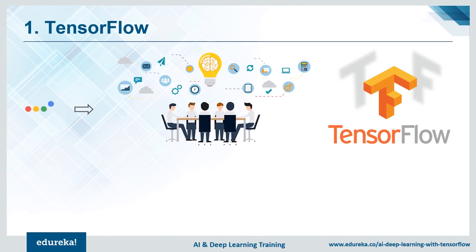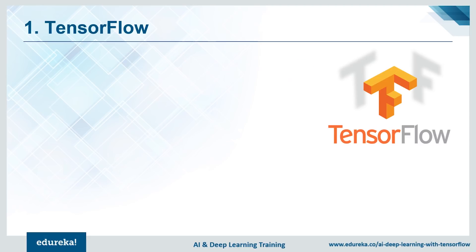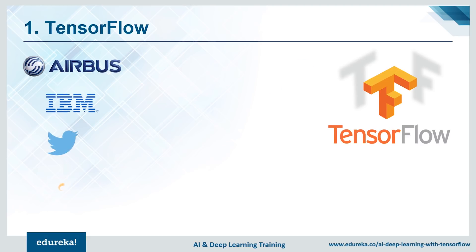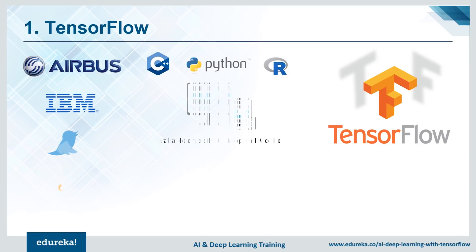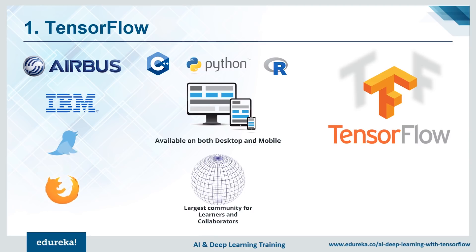TensorFlow is the brainchild of the amazing people at Google. The most well-known use case of TensorFlow has definitely got to be Google Translate. It is coupled with the capabilities of natural language processing, text classification, speech recognition, image recognition, forecasting, and tagging. It has been adopted by several giants such as Airbus, Twitter, and IBM due to its highly flexible system architecture. TensorFlow is available on both desktop and mobile and supports languages such as Python, C++, and R to create deep learning models along with wrapper libraries.